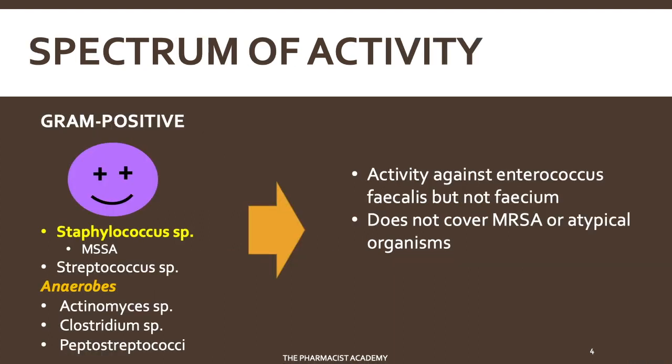In terms of spectrum of activity, carbapenems cover gram-positives: Staphylococcus, Streptococcus, and some gram-positive anaerobes. They have activity against Enterococcus faecalis but not faecium. They do not cover MRSA or atypical organisms.